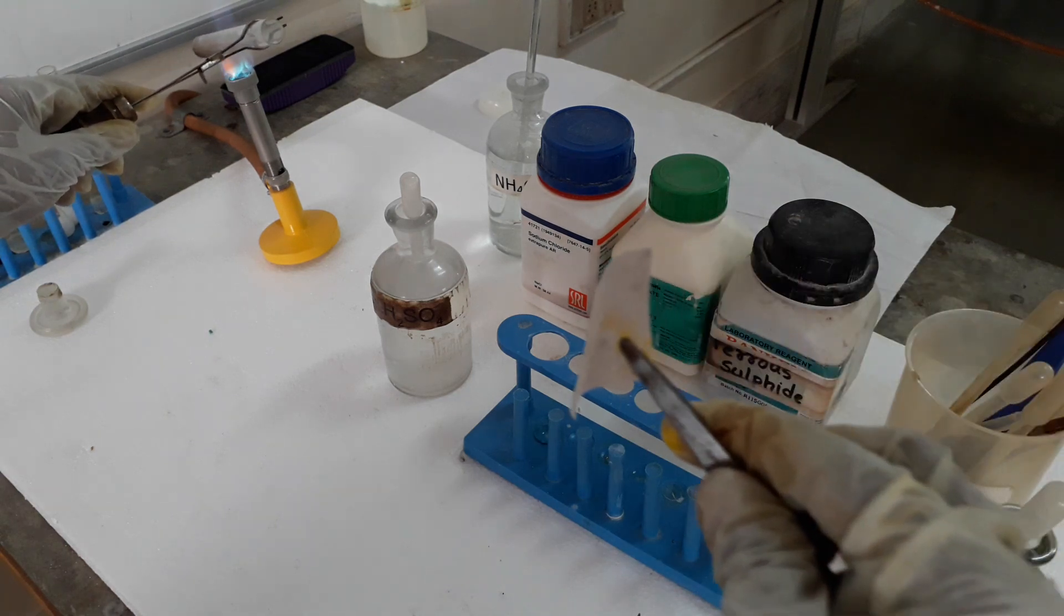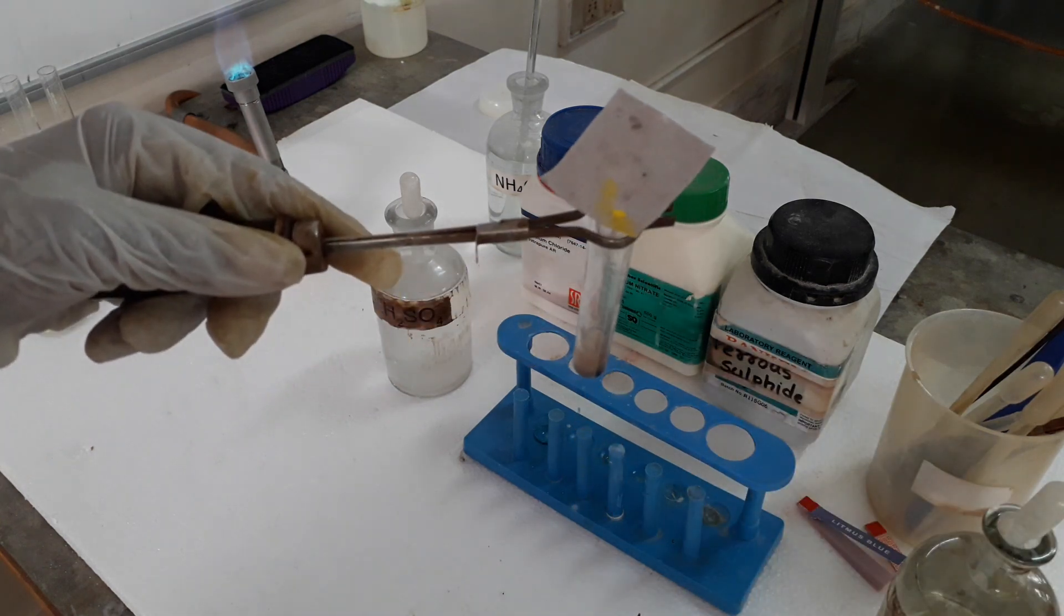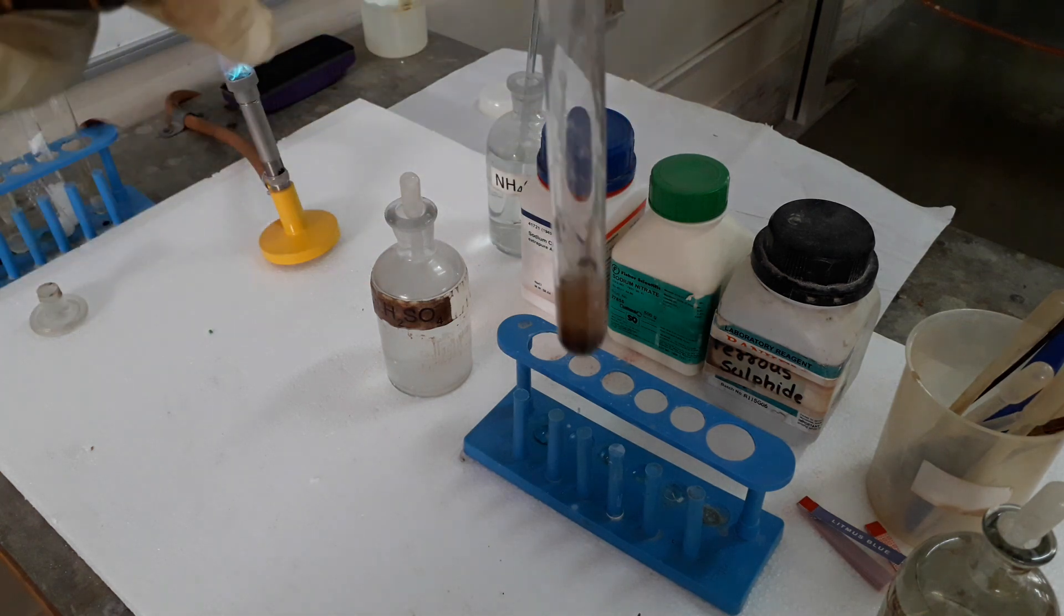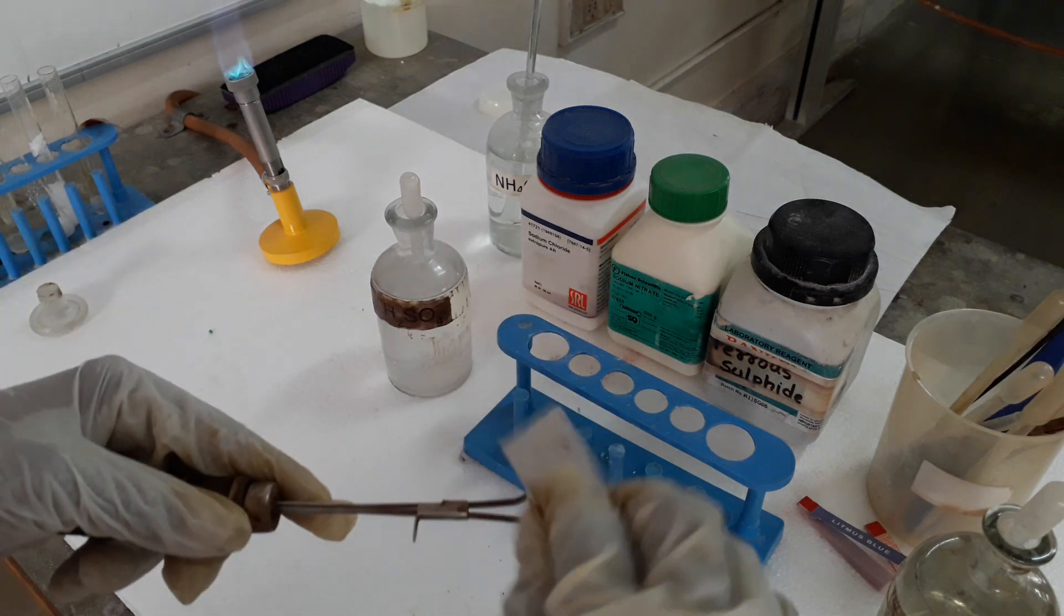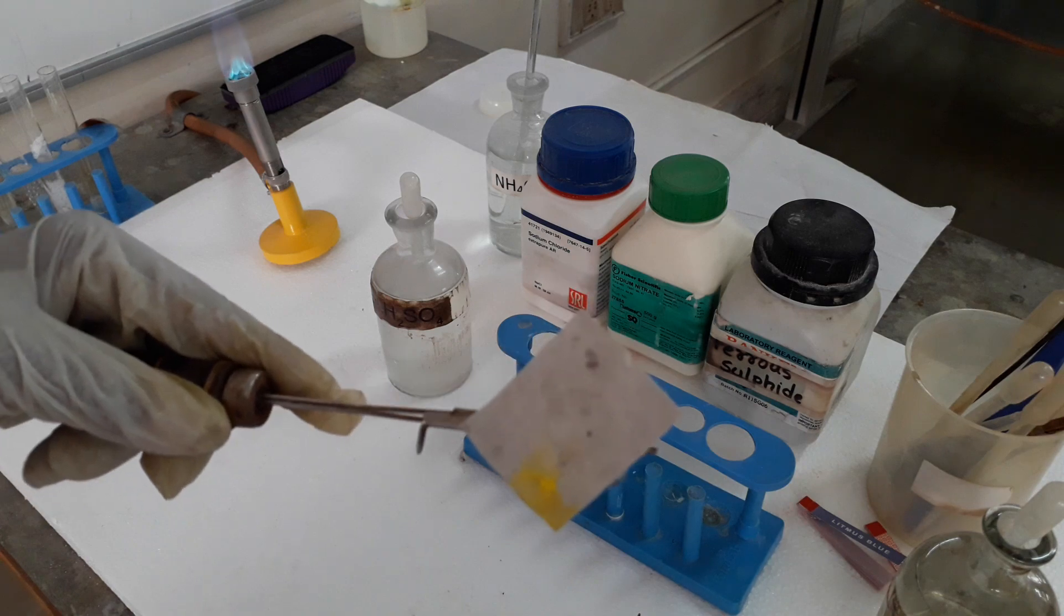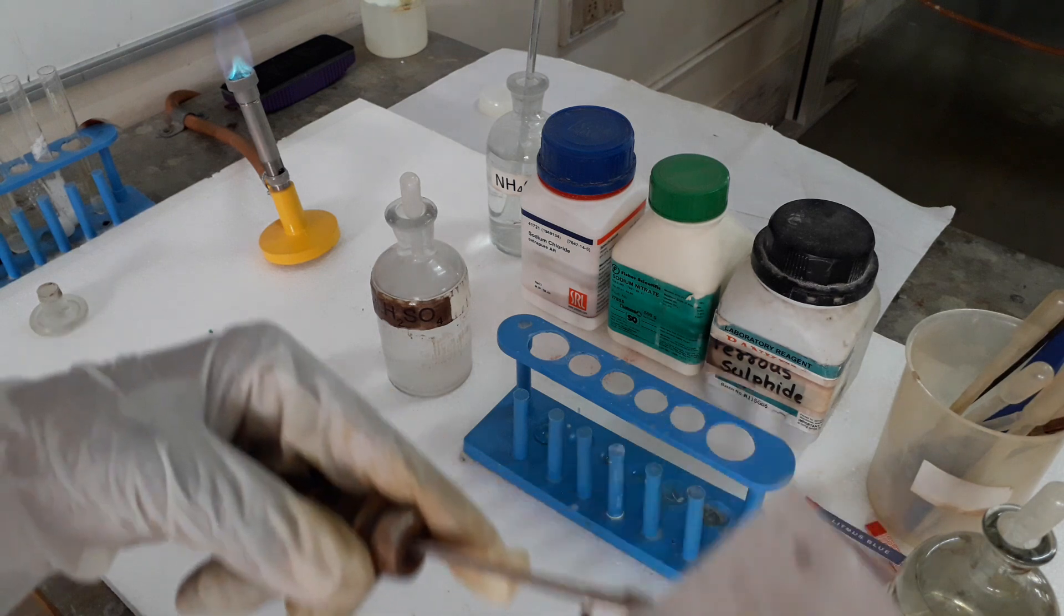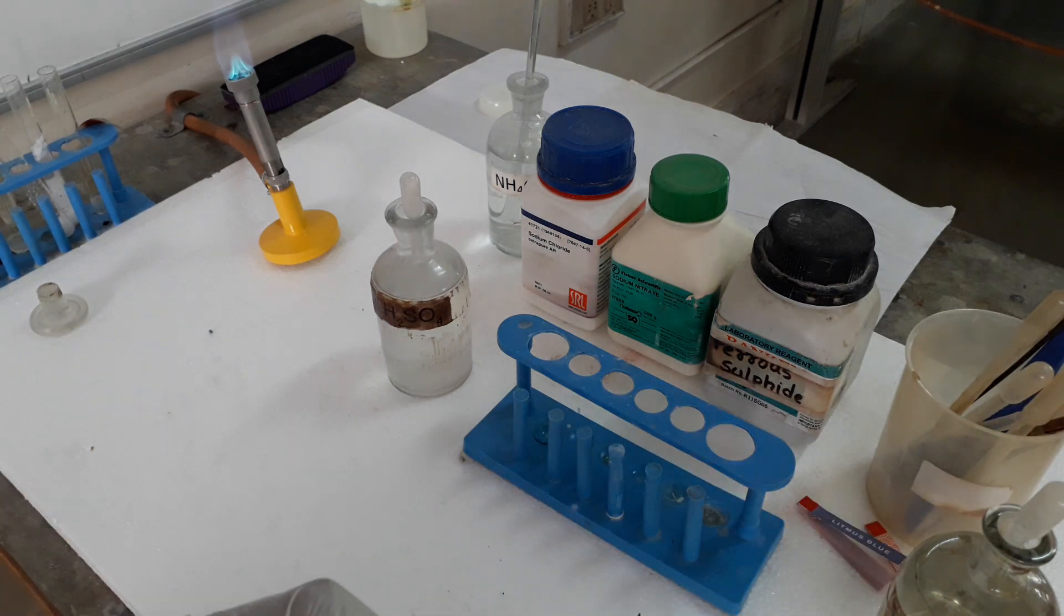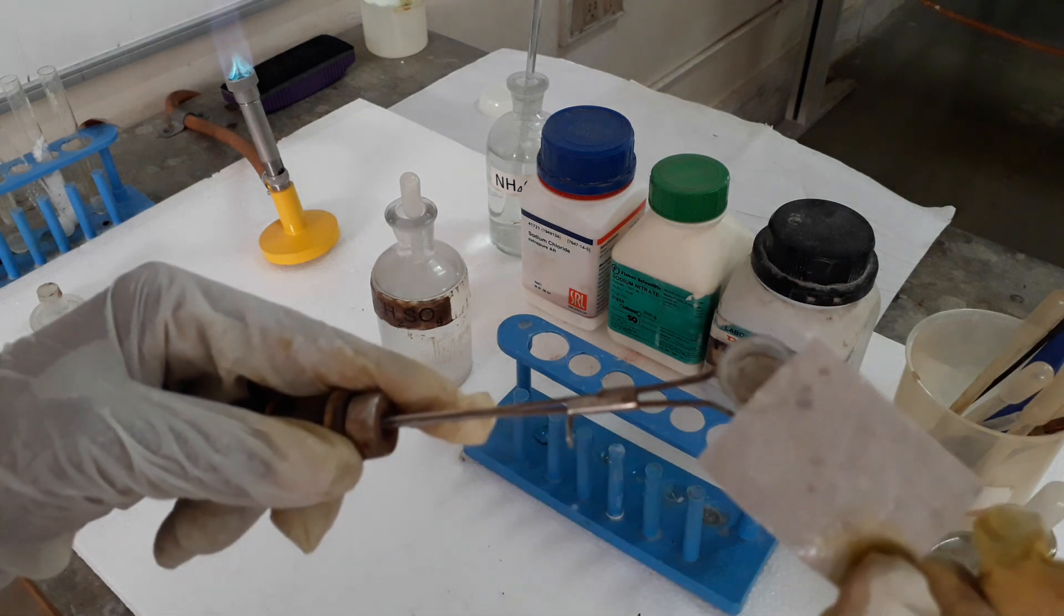The gas has a rotten egg smell and will turn lead acetate paper silvery black. This is lead acetate paper. Here we have hydrogen sulfide gas coming out, and lead acetate paper will turn silvery black. It has started turning silvery black. You can see this shiny black color.